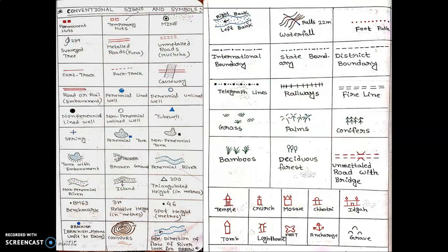Now let's look at boundary symbols. For international boundaries, you see a long dash followed by a dot, then dash, then dot. For state boundary, the pattern looks similar but the dash is shorter than in international boundaries. There is also a distinct symbol for district boundary, and a symbol for railways.